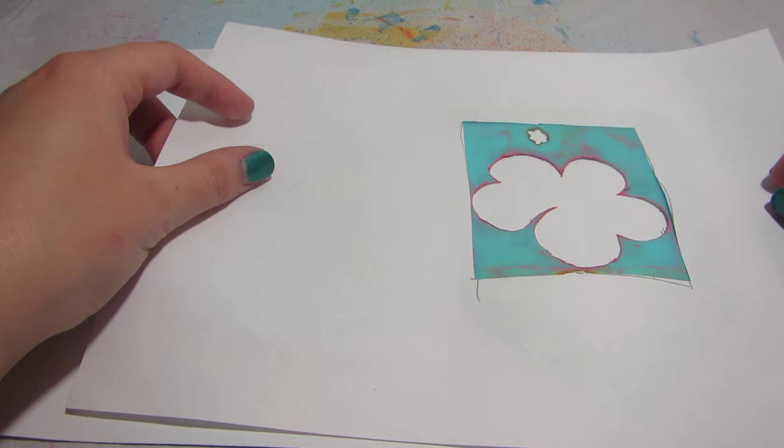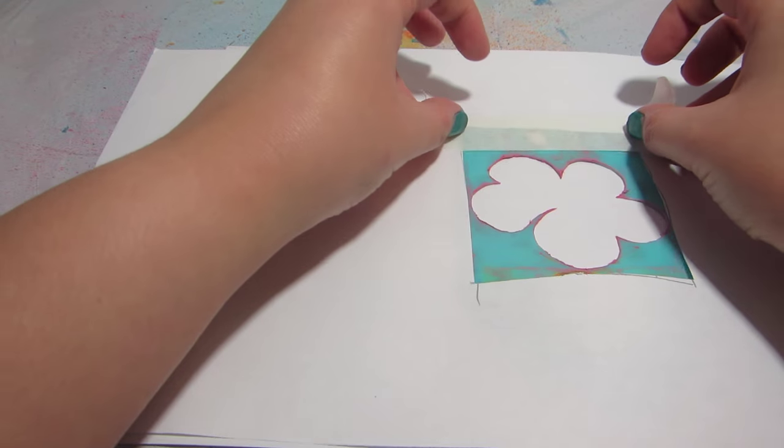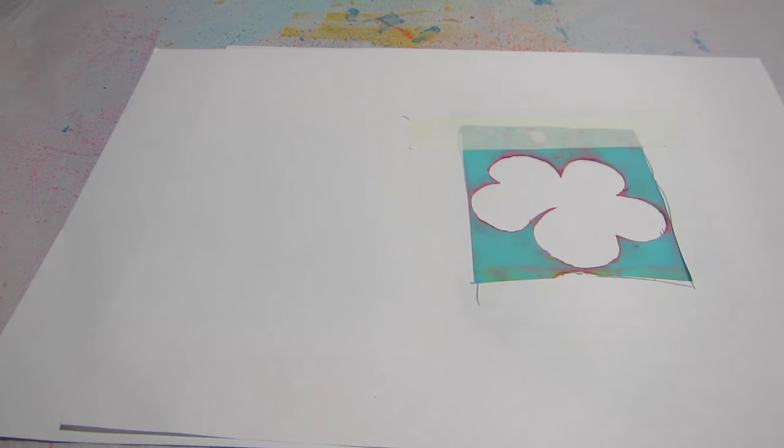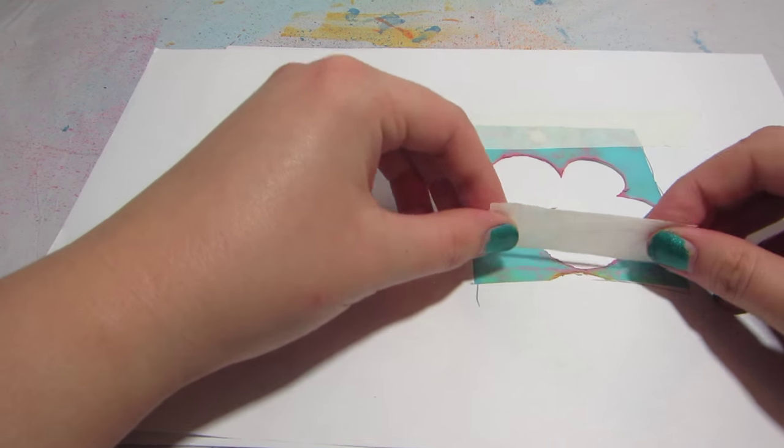Use paper and tape to protect the surrounding canvas. You may only want to fill in certain parts of your stencil. If that's the case, then just cover the areas you don't want to fill in with tape or paper.